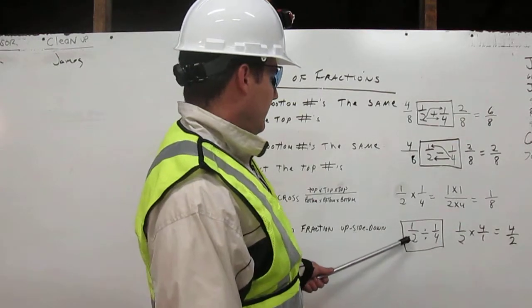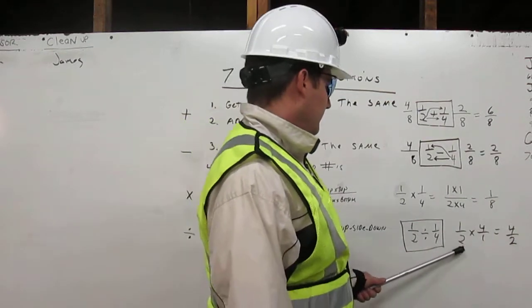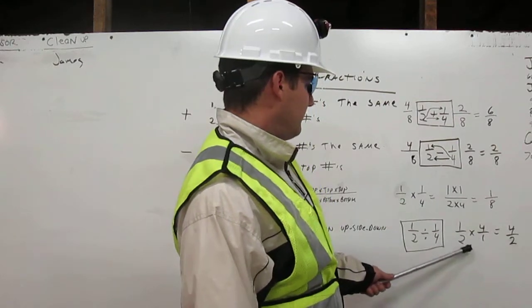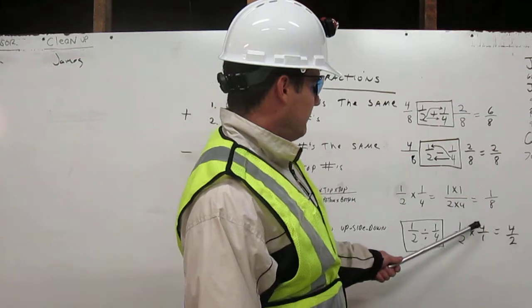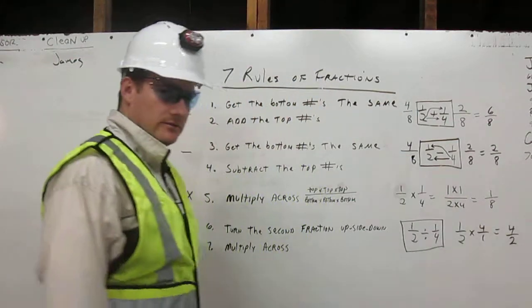In this example right here, we have one-half divided by one-fourth. Now, we are going to put it over here. It is one-half times four over one. That is where we turn it upside down. So, it is now one times four is four, two times one is two. That is how we divide fractions. Thank you.